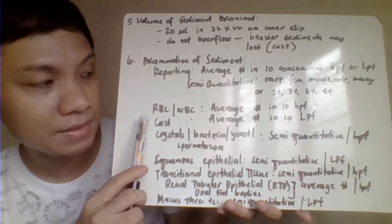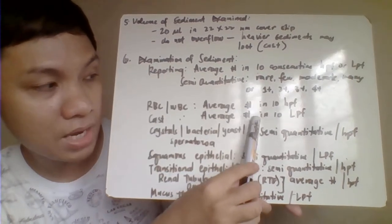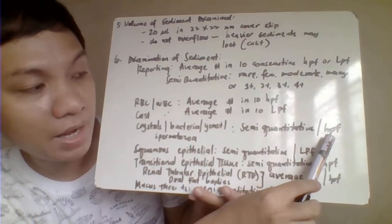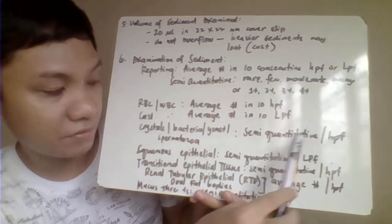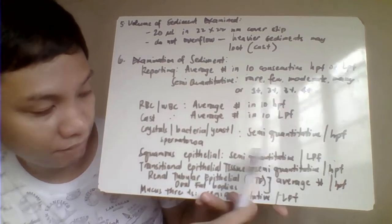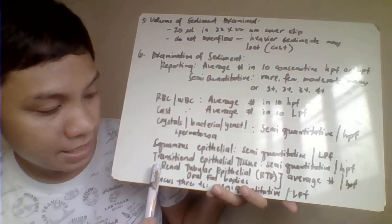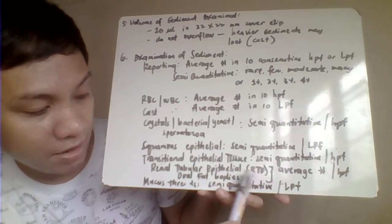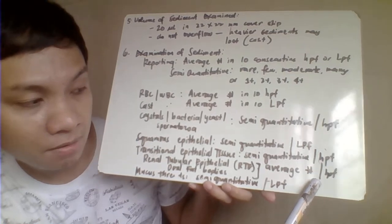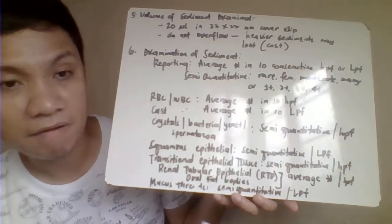RBCs and WBCs are reported as average number in 10 HPF. Casts are reported as average number in 10 LPF. Crystals, bacteria, yeast, and spermatozoa are reported as semi-quantitative per HPF. Squamous epithelial cells are reported as semi-quantitative per LPF. Transitional epithelial tissue is semi-quantitative per HPF. Renal tubular epithelial cells (RTE) and oval fat bodies are reported as average number per HPF. Mucous threads are semi-quantitative per LPF because mucous threads are large.